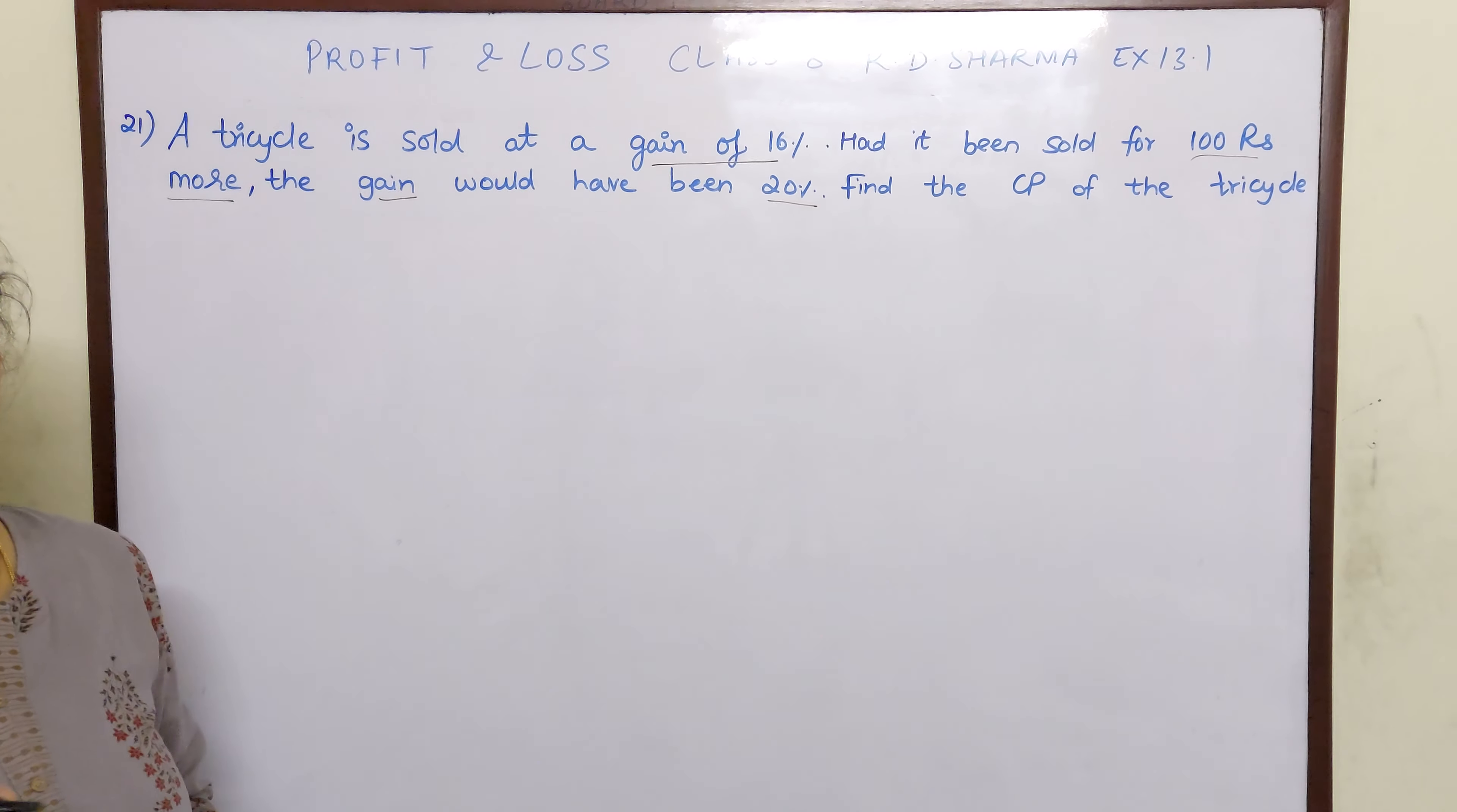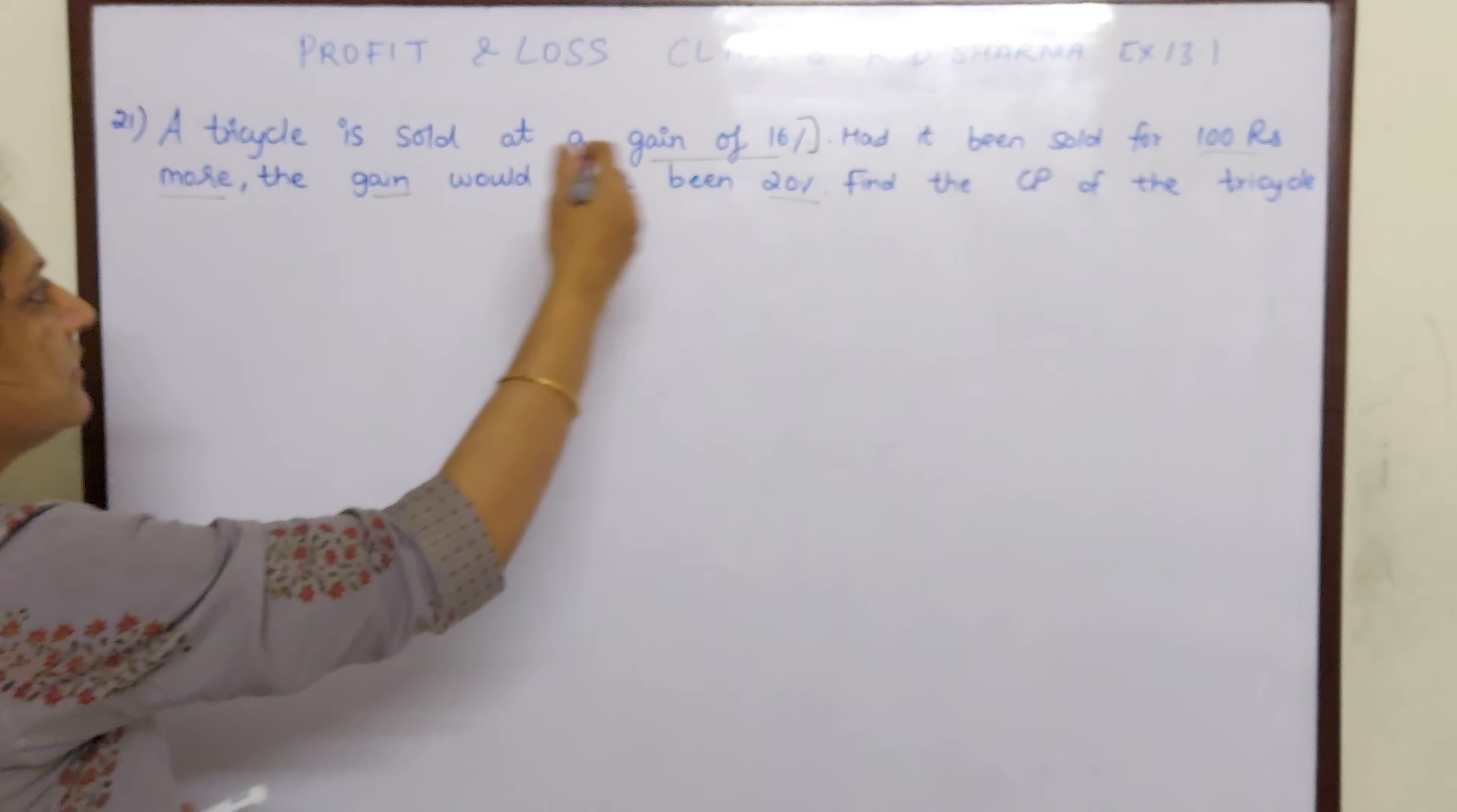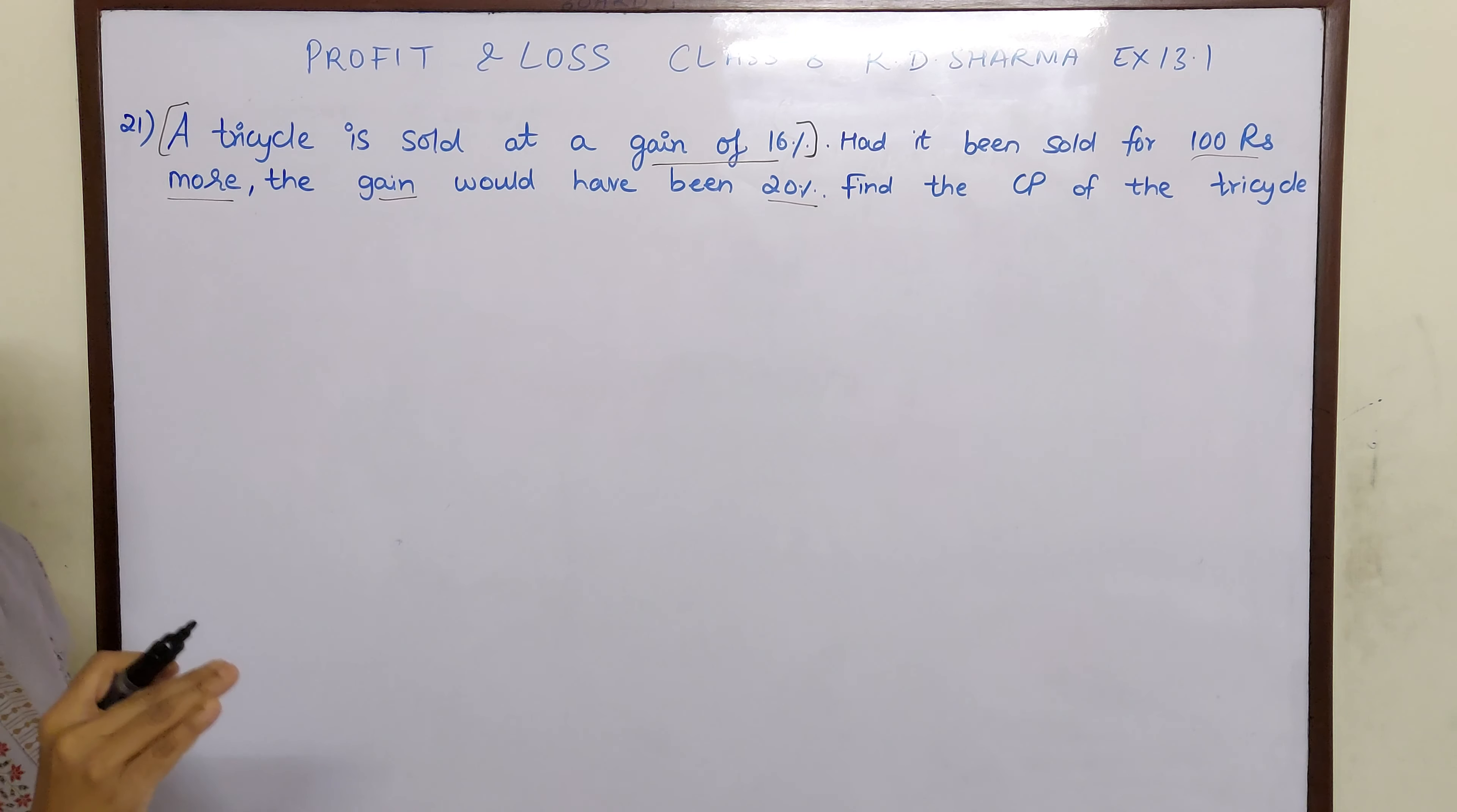Now here children, they have given some conditions. So before going to the second sentence, let us understand what this first sentence tells us. A tricycle is sold at a gain of 16%. So we don't know what is the cost price.